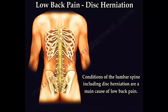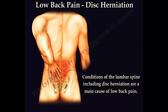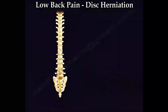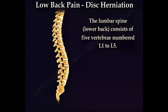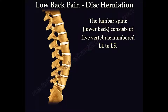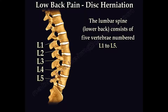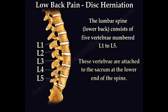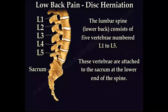Different conditions of the lumbar spine, including disc herniation, are the main cause of low back pain. The lumbar spine, which is the lower back, consists of five vertebrae called L1, L2, L3, L4, and L5. These vertebrae are attached to the sacrum, the tailbone at the lower end of the spine.